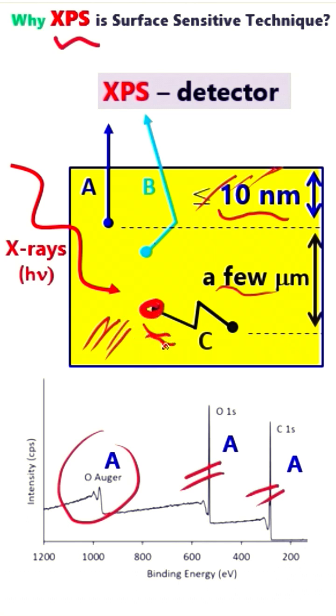These electrons completely lose kinetic energy and cannot reach the detector, so we do not have peaks here. Now look at the case of the B electrons.